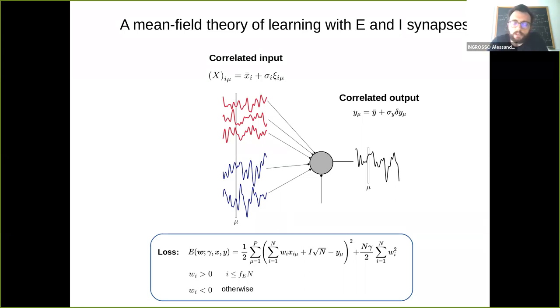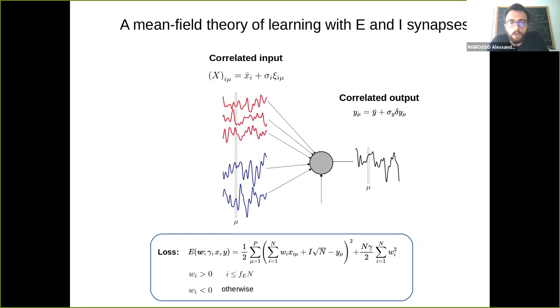The internal dynamics of the network will depend strongly on the structure of the learned connectivity. I hope I've motivated the fact that we can consider a linear perceptron task with excitatory and inhibitory constraints as a toy model of target-based learning — with targets coming either from a random network or from actual neural recordings.